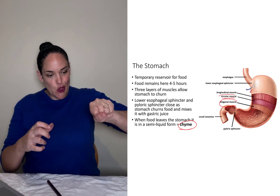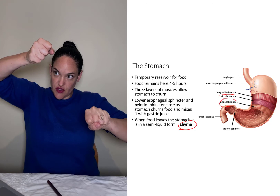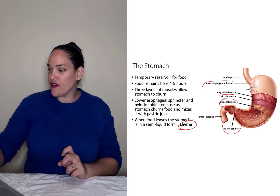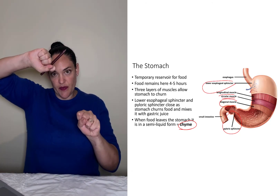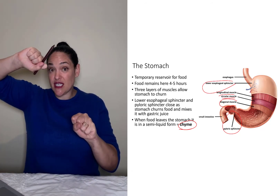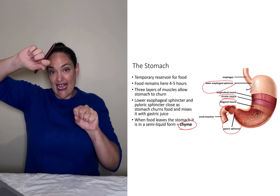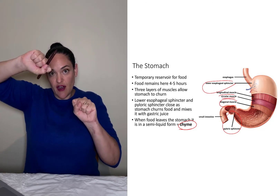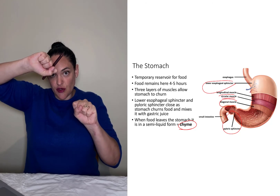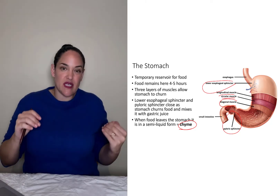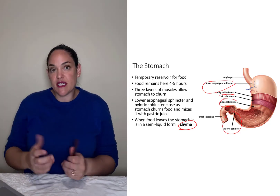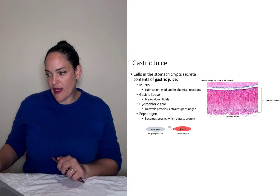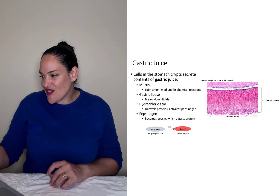Since the stomach is a reservoir, when food enters it, both the pyloric sphincter and the lower esophageal sphincter close. That's important because gastric juice is very acidic, and closing off the stomach ensures nothing spills up or out and negatively impacts surrounding structures.